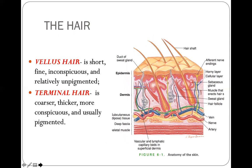Next is the hair. Remember that we have vellus hair and terminal hair. Vellus hair is also known as baby hair — it is short, very fine, inconspicuous, and not very dark in color. Terminal hair is coarser, thicker, more conspicuous, and usually pigmented, meaning terminal hair is darker compared to vellus hair.